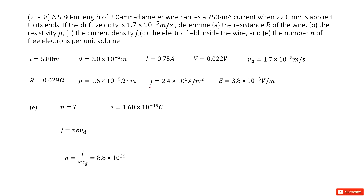The last part requires finding the number n of free electrons per unit volume. We use the drift velocity equation: J equals n times e times v_d, where e is the electron charge from your textbook, J is from part C, and v_d is given. Solve for n, input the given quantities, and get the answer. Thank you.